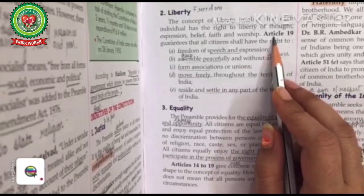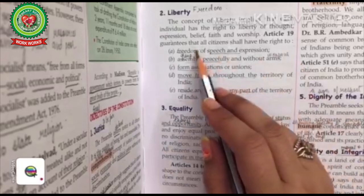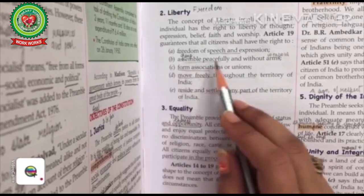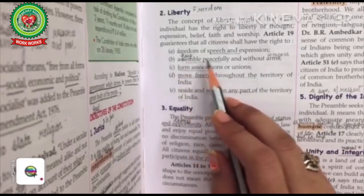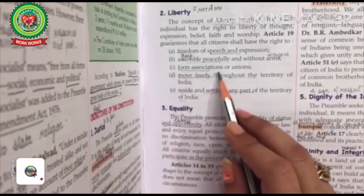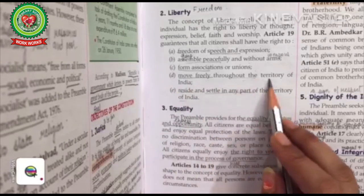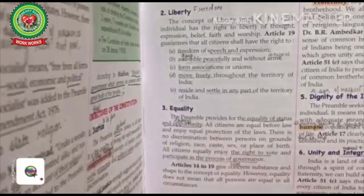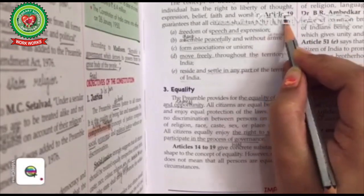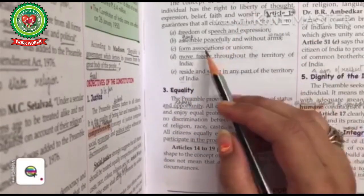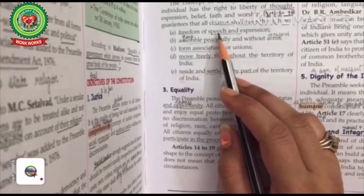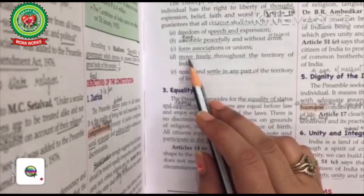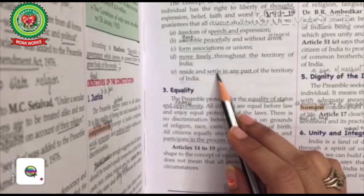Article 19 guarantees that all citizens shall have the right to freedom of speech and expression, the right to assemble peacefully and without arms — meaning they can form groups but peacefully without weapons — to form associations or unions, to move freely throughout the territory of India, and to reside and settle in any part of India. So Article 19 shows the right to freedom: we can speak on social media, express our views, group peacefully, move freely, and settle anywhere in the country.